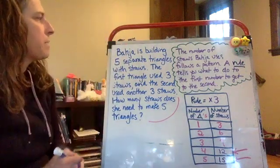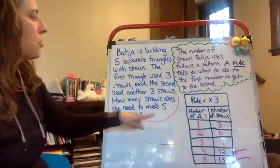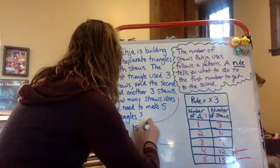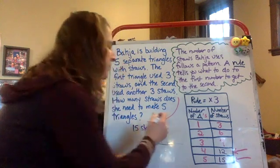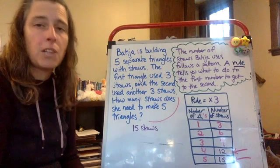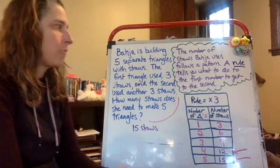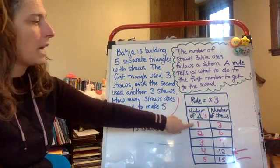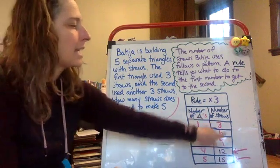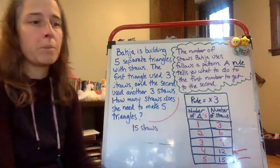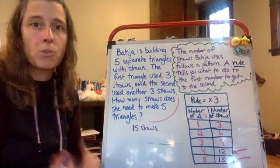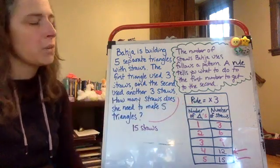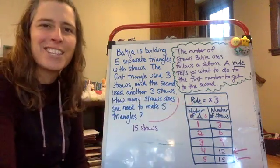So now we come back to our word problem: how many straws does she need to make five triangles? Our answer is fifteen straws. Today we are focused on following the rules that you are going to see with your in and out boxes. Your first job is to look at the rule, and your next job is to apply the rule to the in number to get the out number. In the next few days we'll explore how to find a rule when it's not given, and how to work backwards from a rule. But today your job is to just work on following the rule for the in and out boxes. Have a great day third graders!